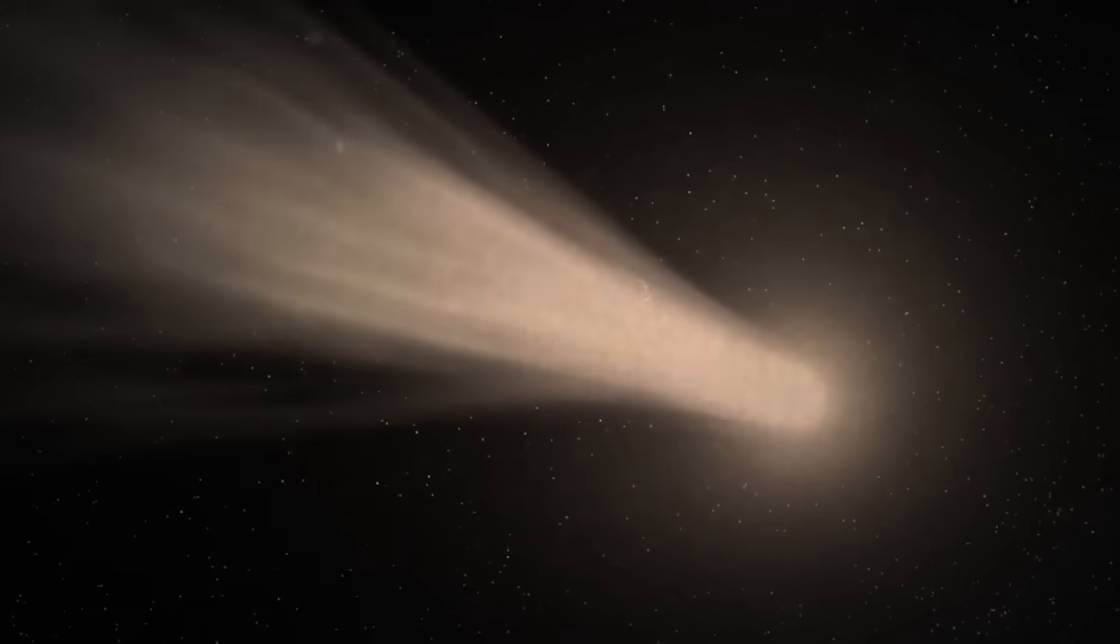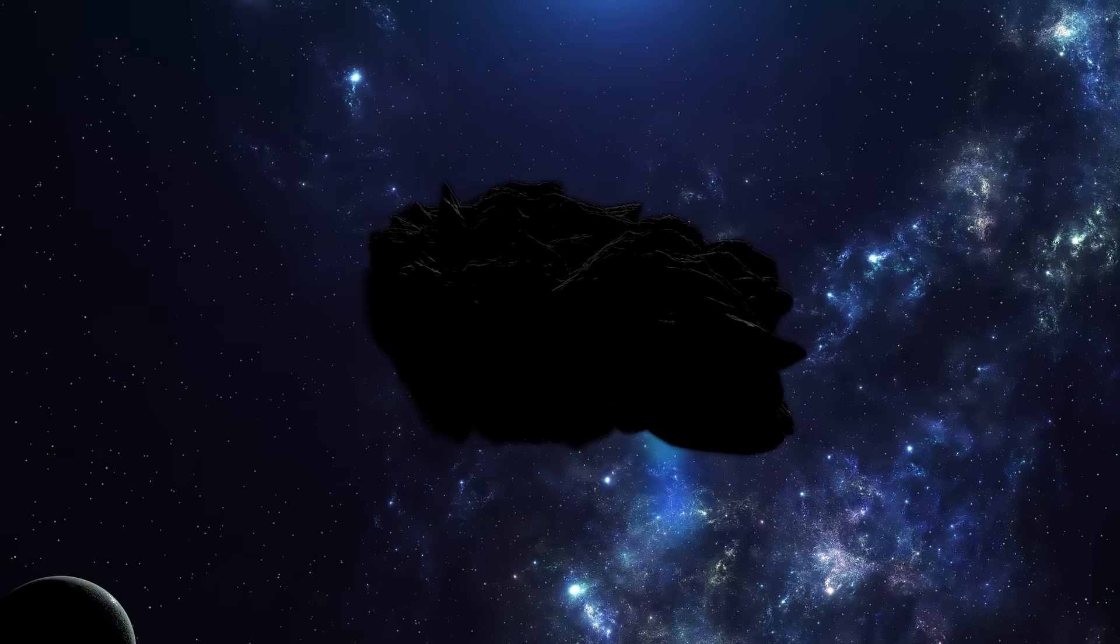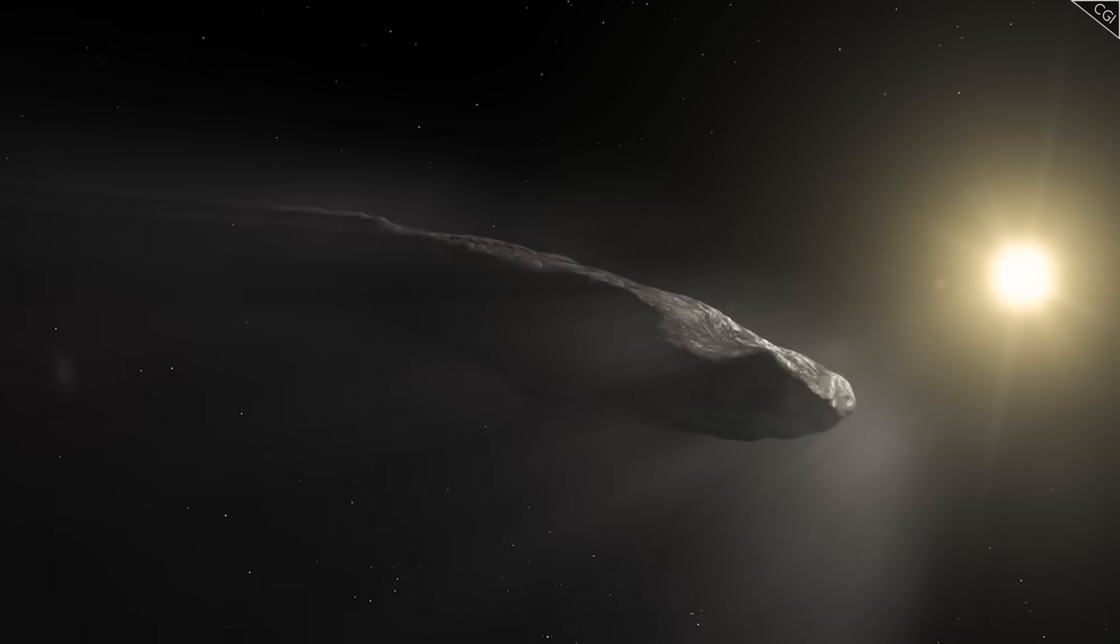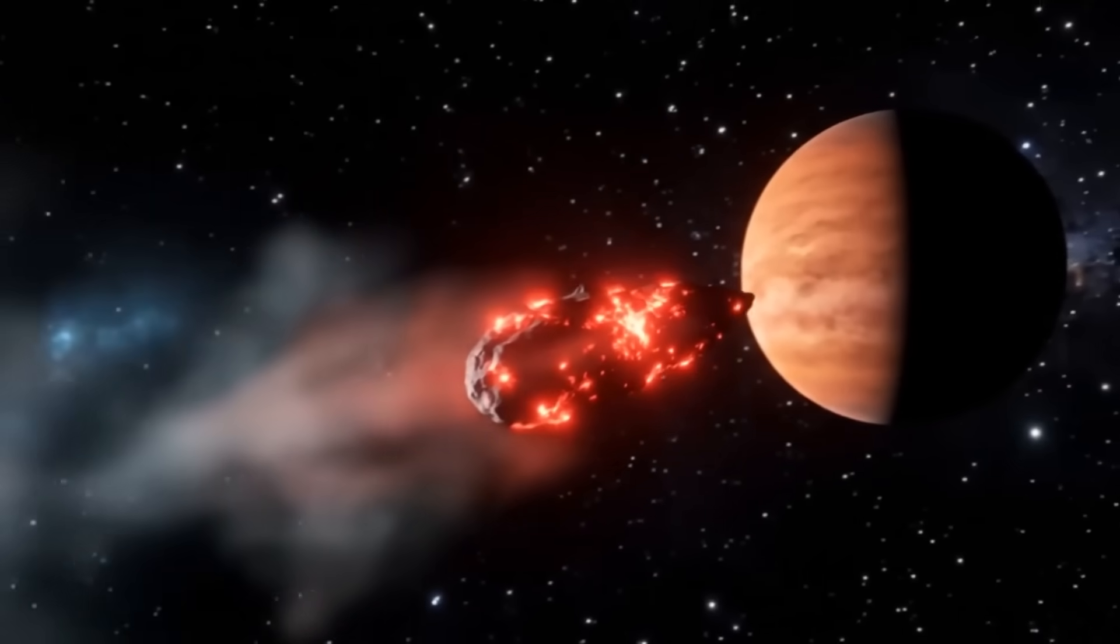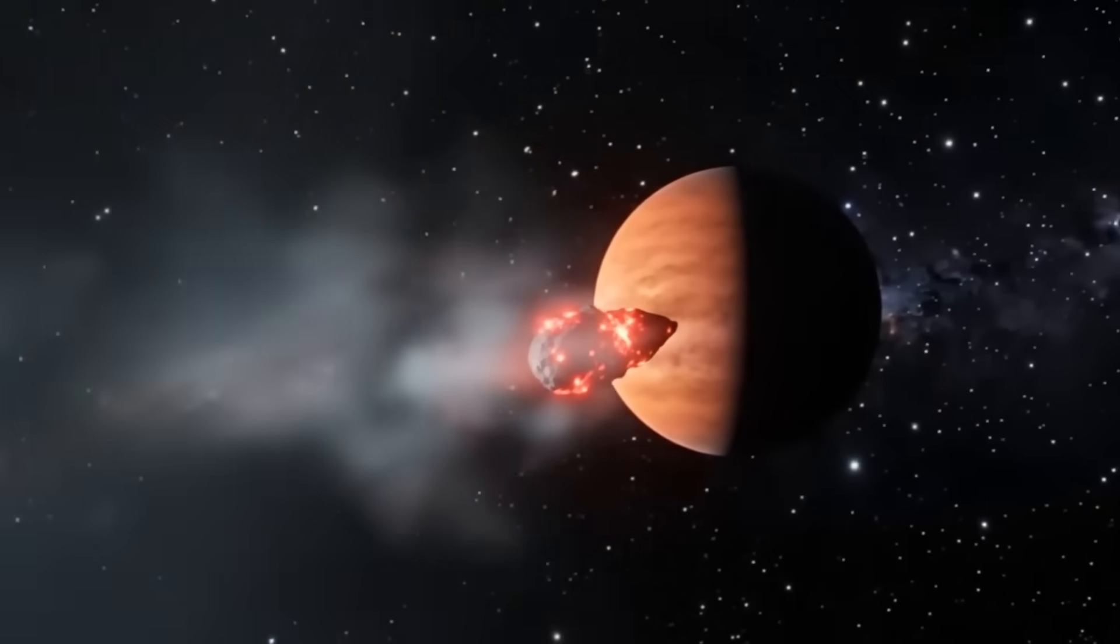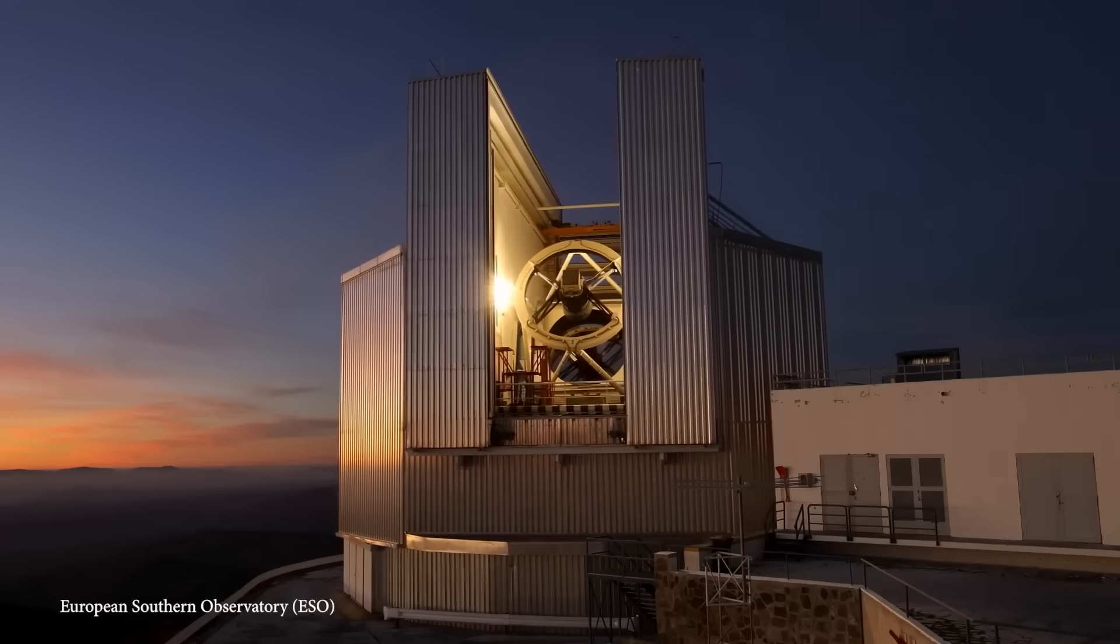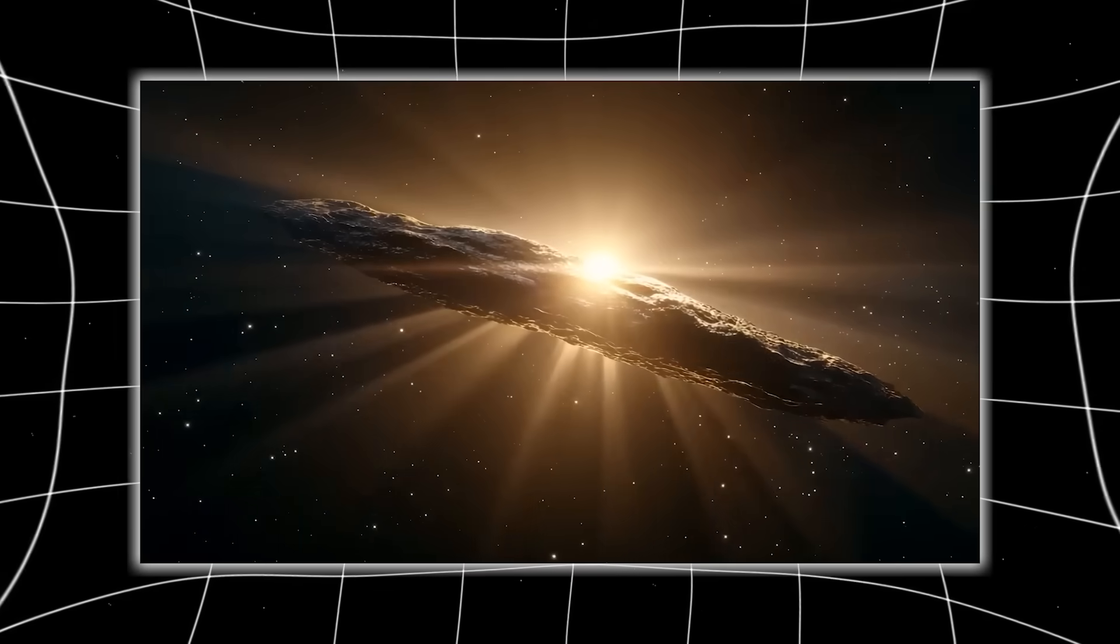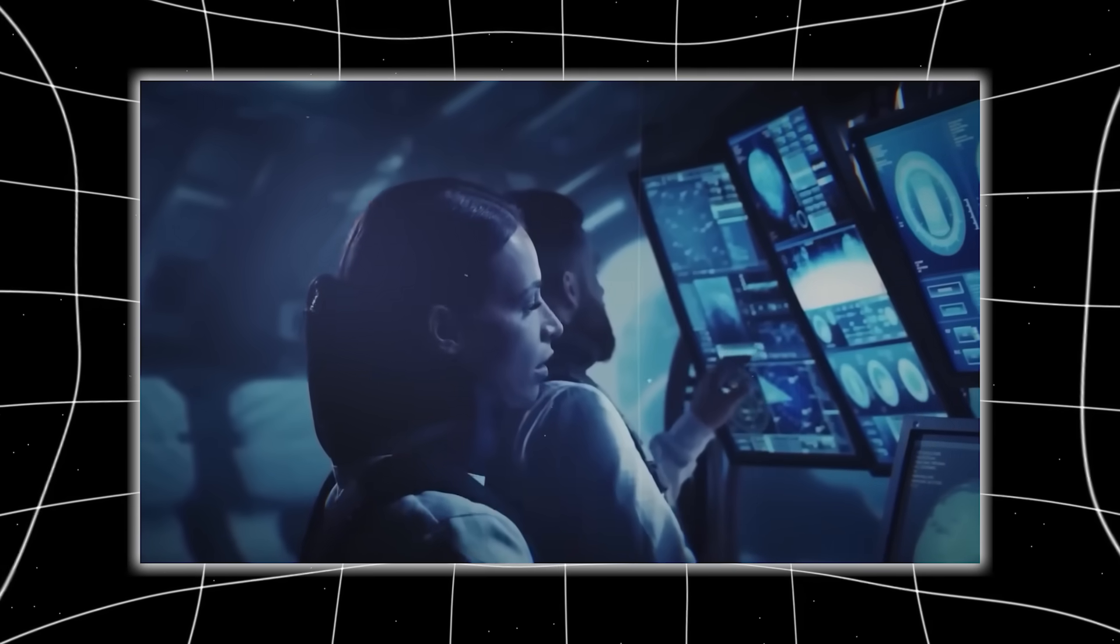Some of these jets pointed away from the sun as expected, but others pointed toward it. This alone defies standard comet models, which rely on sunlight heating subsurface ice. Water vapor cannot produce sunward jets without violating basic thermodynamics. But tick by tick, pulse by pulse, the jets repeated in cycles of roughly six hours, consistent with rotation or controlled venting. These findings matched Earth-based telescopes that had observed heartbeat-like pulses for months. Now, with confirmation from Mars, the patterns appear not chaotic, not random, but structured.